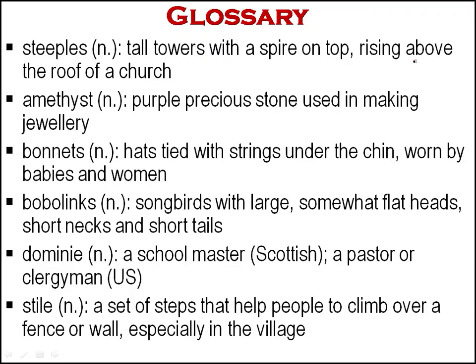About the glossary: Steeples — tall towers with a spire on top. Amethyst — purple, precious stones. Bonnets — head coverings tied with strings under the chin, worn by babies and women. Bobolink — songbirds with large somewhat flat heads, short necks and short tails. Dominion — a schoolmaster, a pastor in Scotland and clergyman in the USA. Stile — a set of steps that help people to climb over a fence or wall.